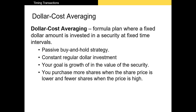With dollar cost averaging, you're investing the same amount in each security at regular time intervals. It's essentially a passive buy-and-hold strategy. The key here is that you're investing the same dollar amount, and over time the price of the shares will increase or decrease, meaning you're purchasing a different number of shares every time you invest.